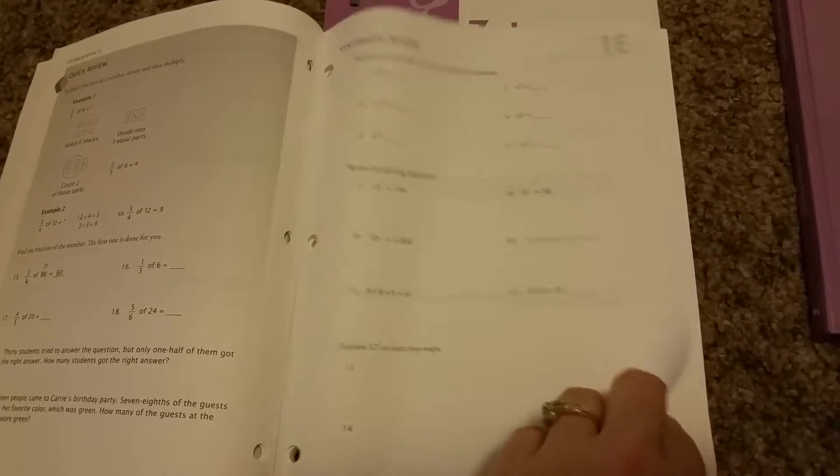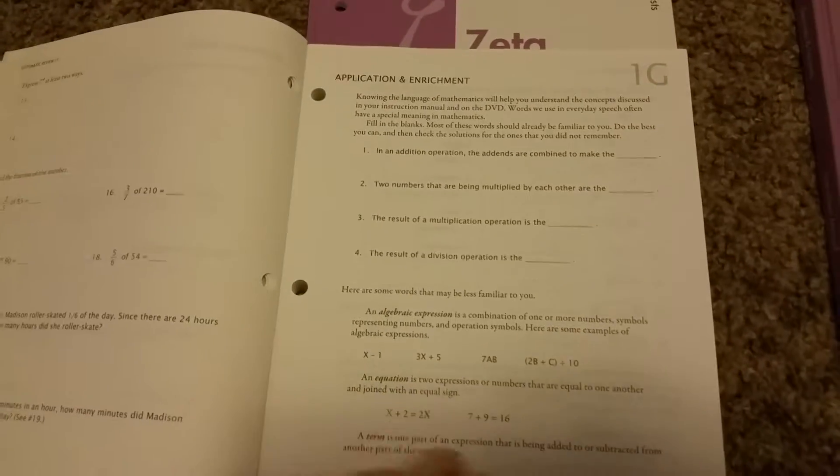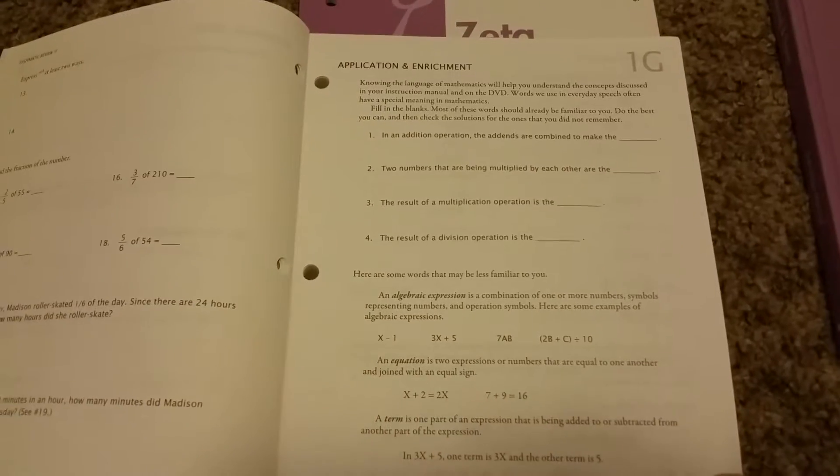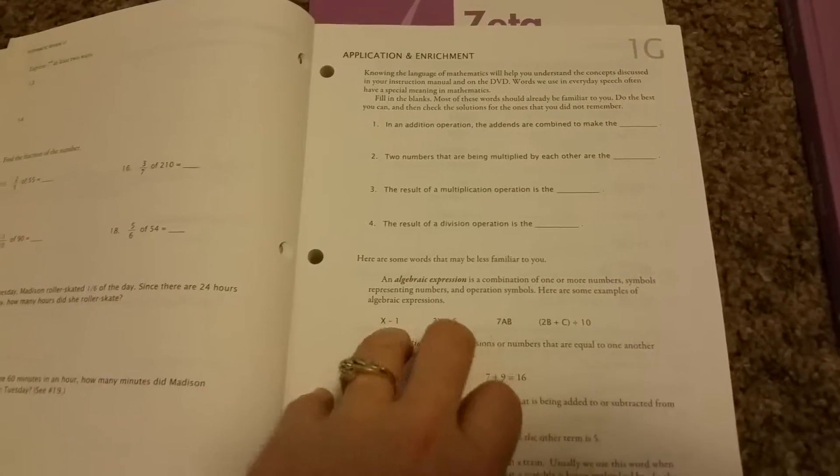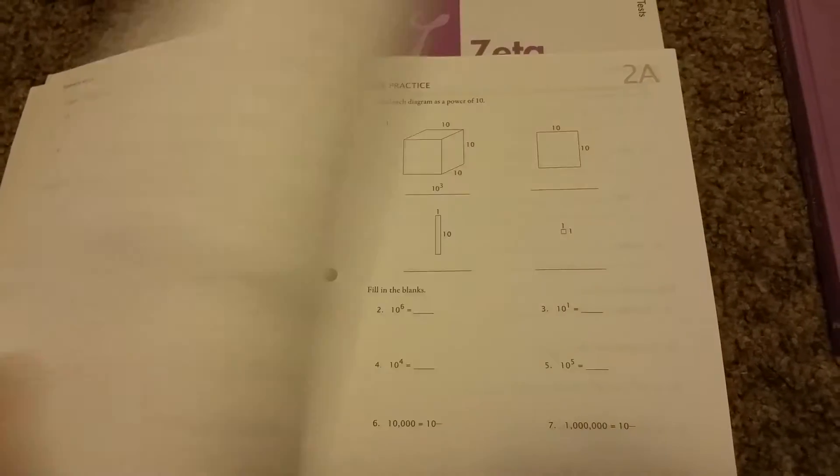And then you don't need to do all three. Now in Zeta, they add the G again, but it's for honor roll students. So if your student needs to be challenged more, or needs extra work, or just loves math and wants this, they can do it. That's optional. And then you do the test.